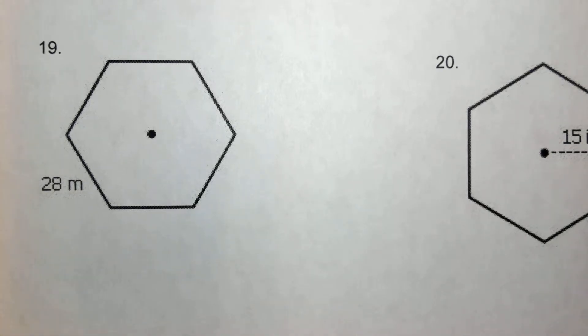Alright, this is number 19 on your review. This is a hexagon, and we're going to try to solve for the area of the hexagon given only the length of a side.